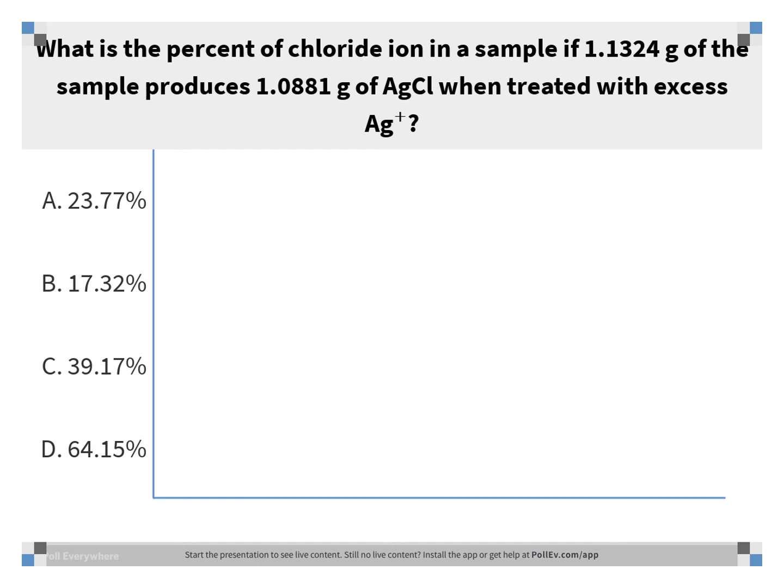The correct answer is A, 23.77%. You would take the grams of silver chloride that got produced, which is 1.0881, and work backwards from the amount of product to the amount of reactant. You would do grams of silver chloride to moles of silver chloride, moles of silver chloride to moles of chloride ion, and moles of chloride ion to grams of chloride ion. For the molar mass of the chloride ion, you would just use the mass of chlorine — one electron doesn't make a noticeable difference. Once you have the mass of the chloride ion in the sample, you can compare that to the mass of the whole sample. The mass of chloride divided by the mass of the sample times 100% gives you 23.77%.